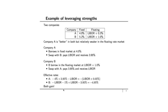Company A, which is stronger in the fixed rate market, borrows in the fixed rate market. Company B, which is stronger in the floating rate market, borrows in the floating rate market. And then they construct a swap in order to make a derivative product which is going to be better than each of the individual deals available to these companies.